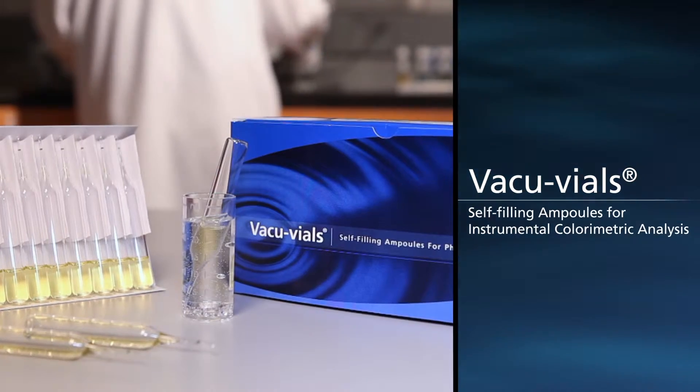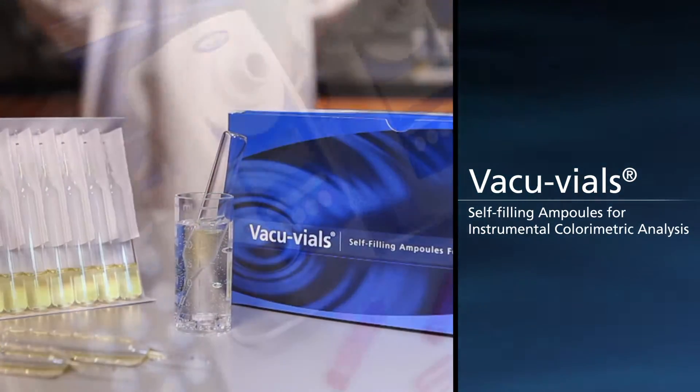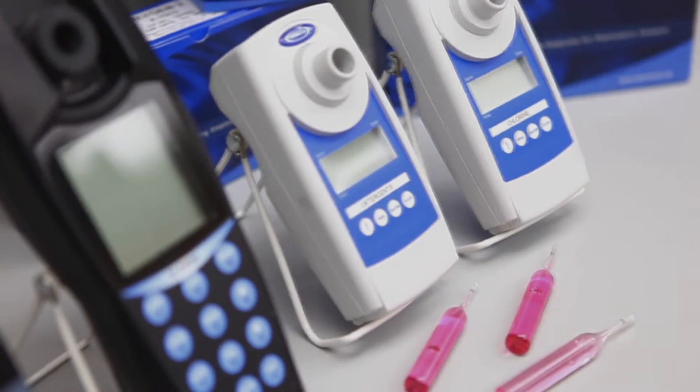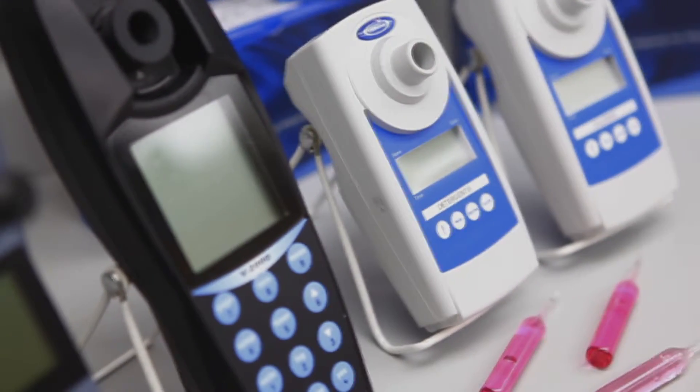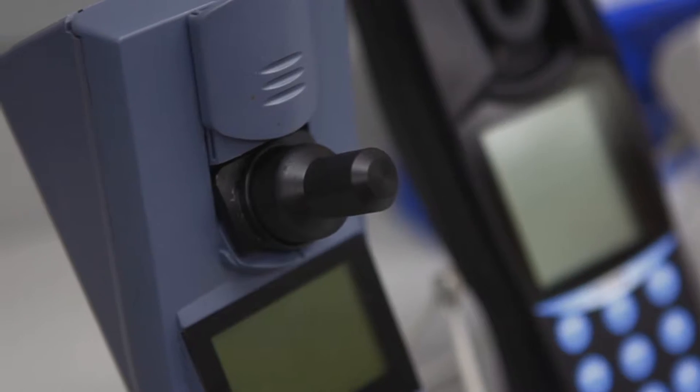Vacuvial Cell Filling Reagent Ampules for Instrumental Colorimetric Water Analysis. Kemetrix unique Snap and Read Vacuvial Cell Filling Ampules can be used with Kemetrix LED Photometers or any spectrophotometer capable of accepting a 13 millimeter diameter round cell.